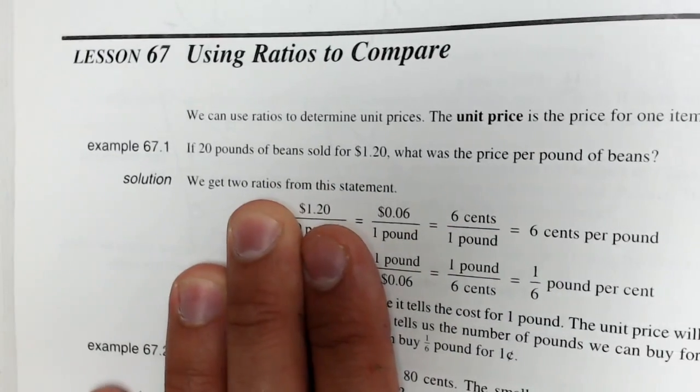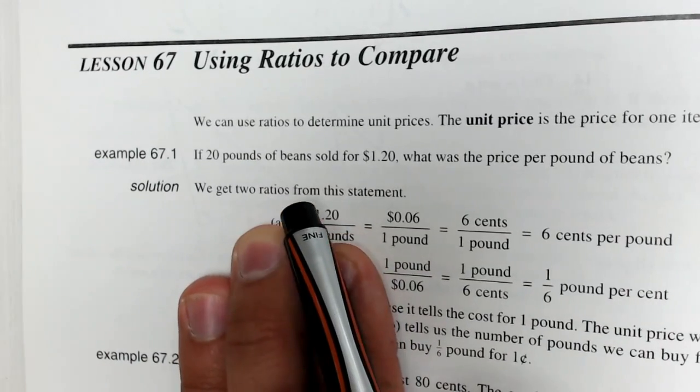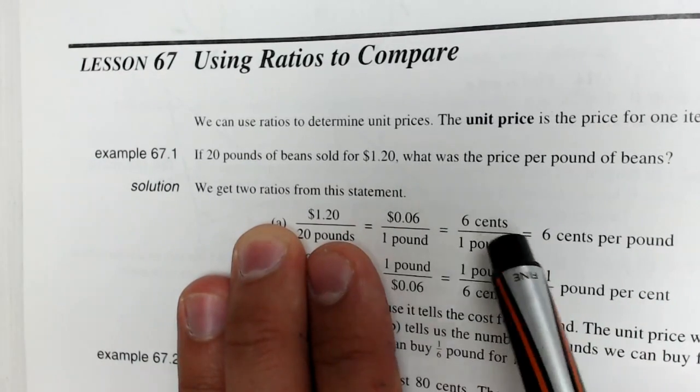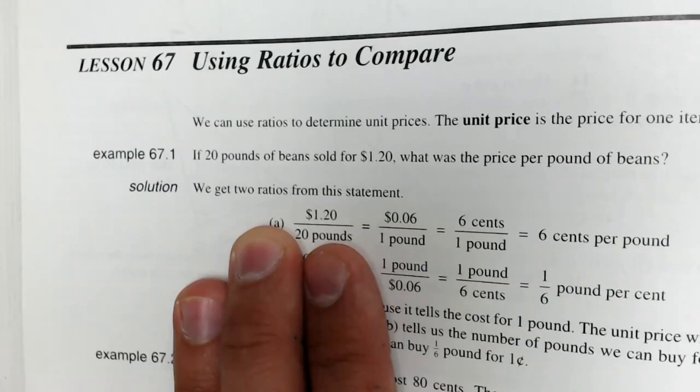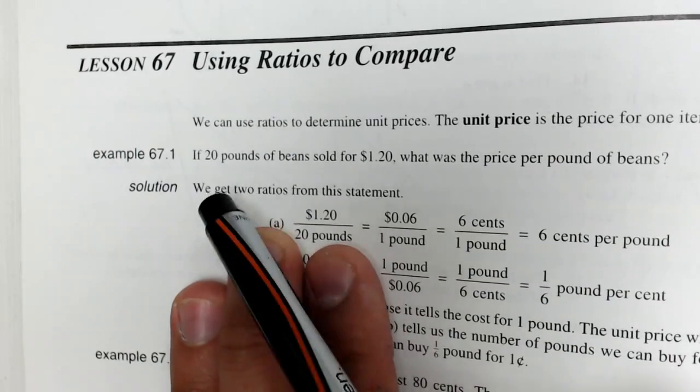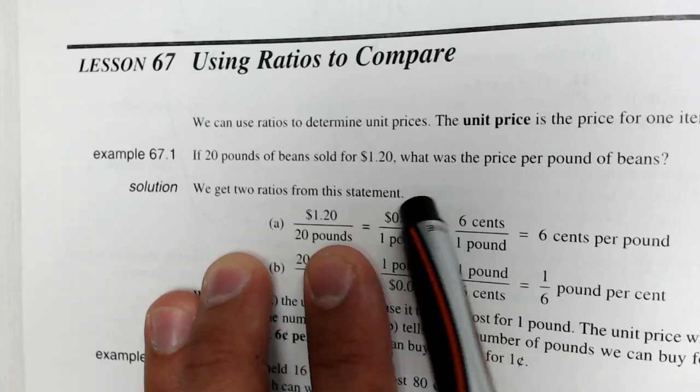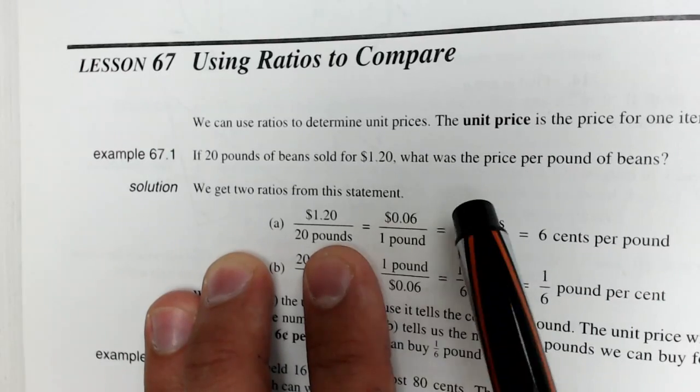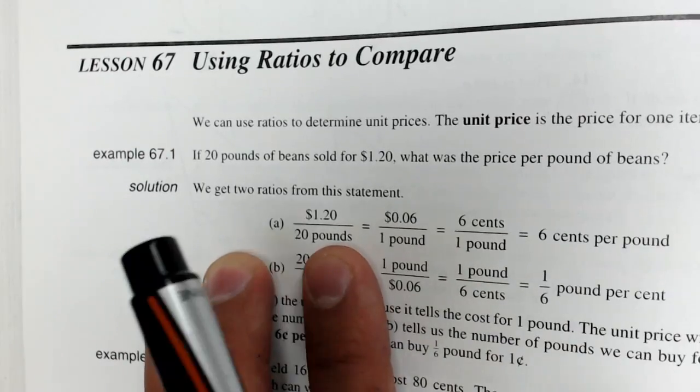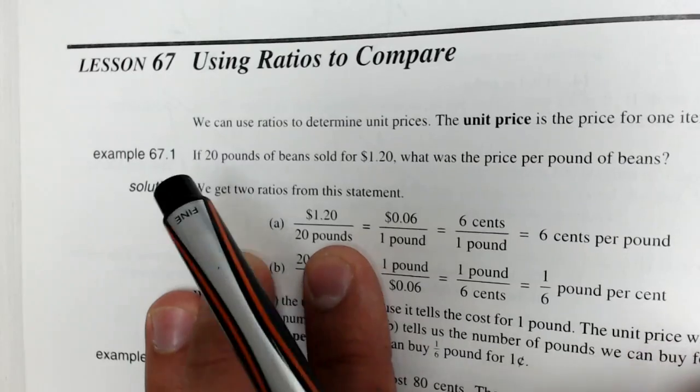It says if 20 pounds of beans sold for a dollar and 20 cents, what was the price per pound of beans? Okay, so all I have to do in this one is write the ratio 20 pounds of beans for the dollar amount, and if I have to find price per pound of beans I have to make that 20 reduced to one.